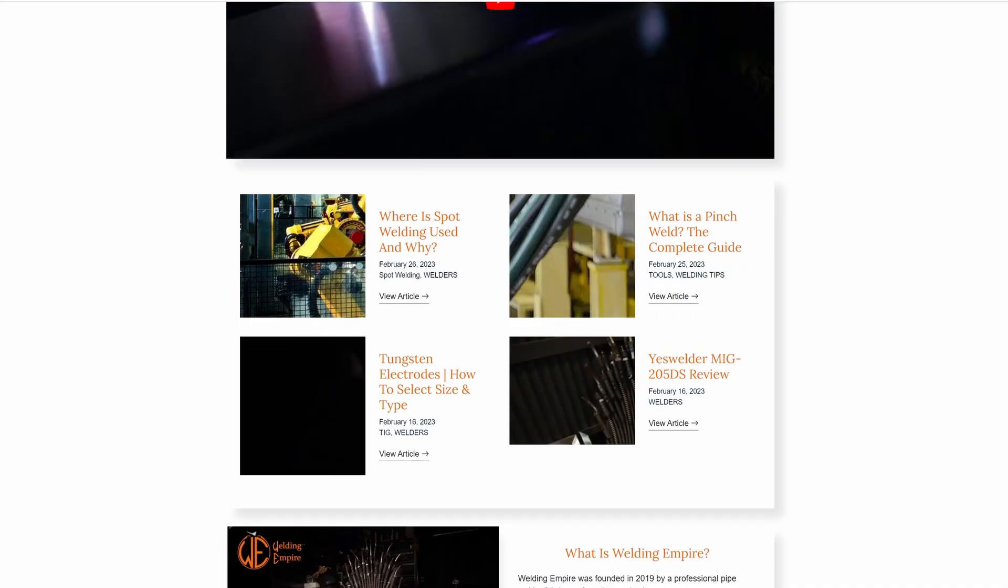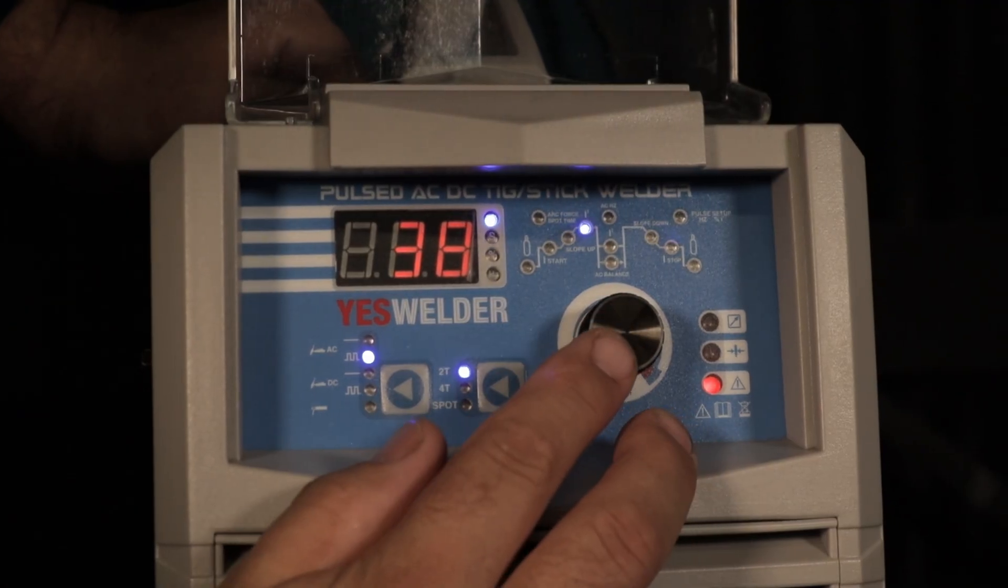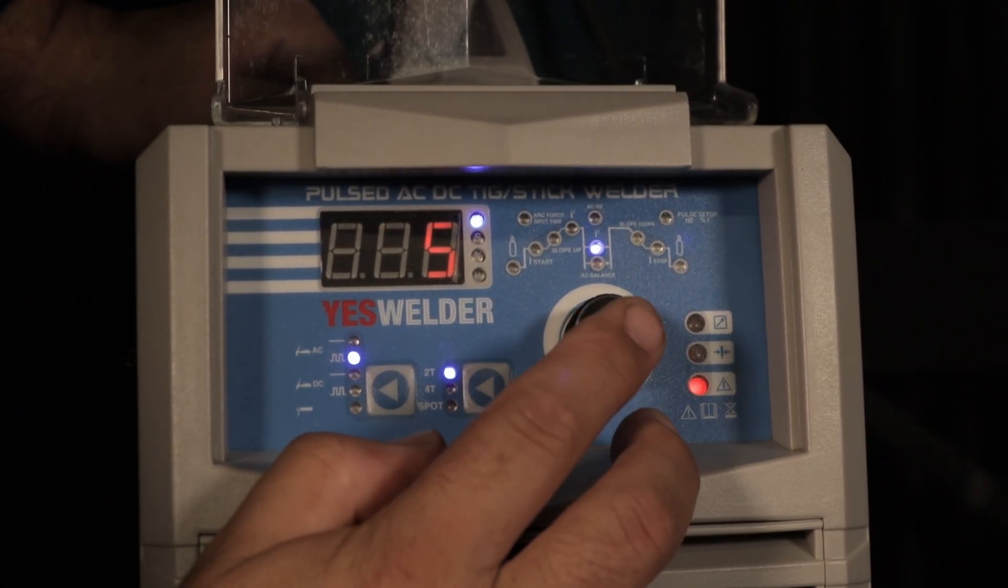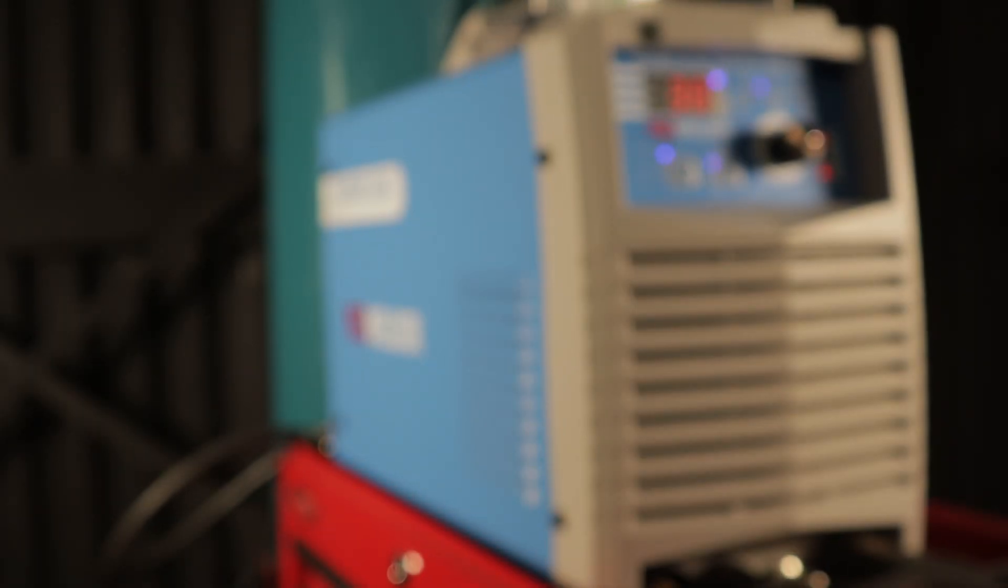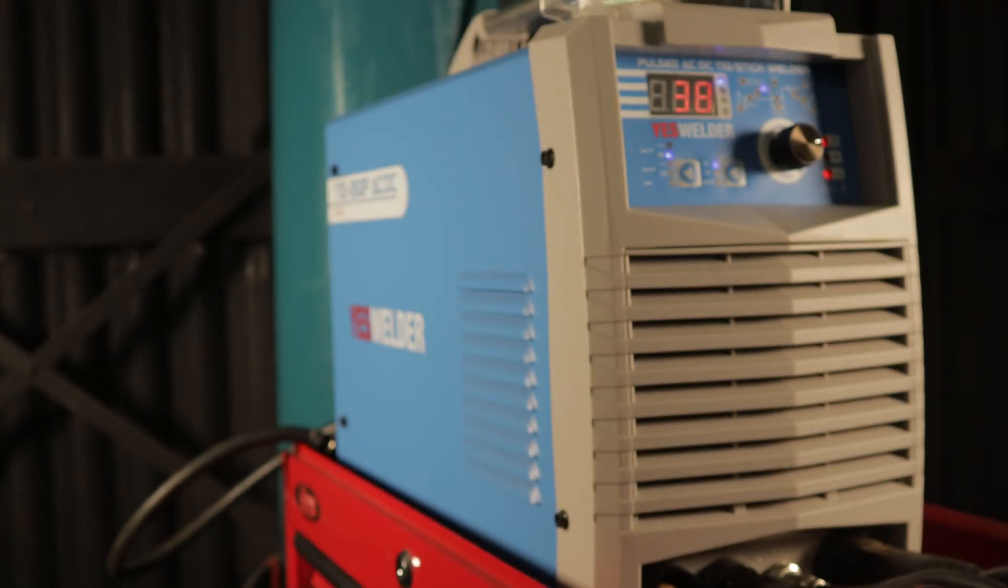Peak amps I set at 38. Next is base current. When you have a pulse selected, it requires a base amperage to switch to. I could have gotten away with 10 or 12, but you can see the quality of a welder by how it handles low amps when TIG welding.